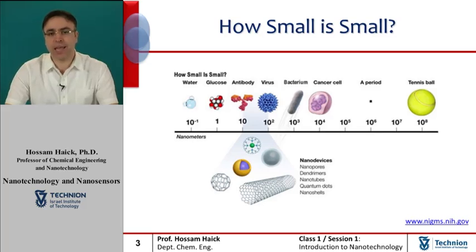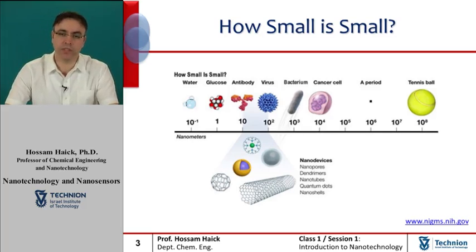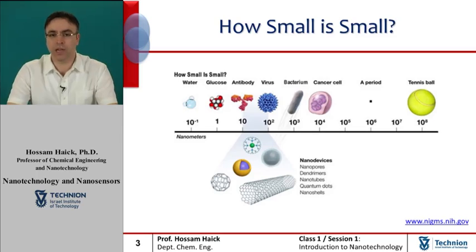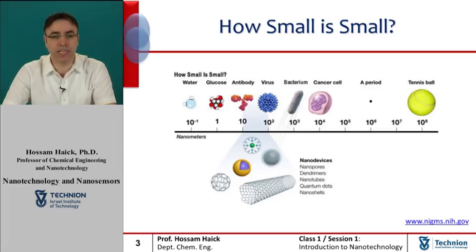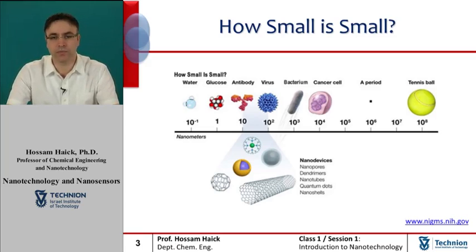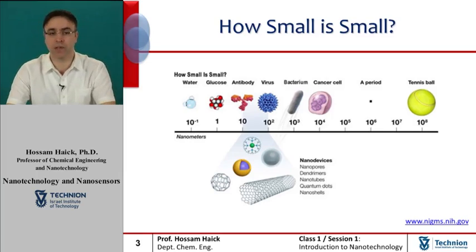If we cut a millimeter into one thousand equal pieces, each piece will be a micrometer. In other words, a micrometer is equal to one millionth of a meter. For example, the diameter of hair is about 40 to 50 micrometers wide, red blood cells are 6 to 10 micrometers in diameter, and many types of bacteria typically measure 5 to 20 micrometers in size. Things on this scale usually cannot be seen with our own eyes, but rather can be seen with a magnifying glass or a microscope.